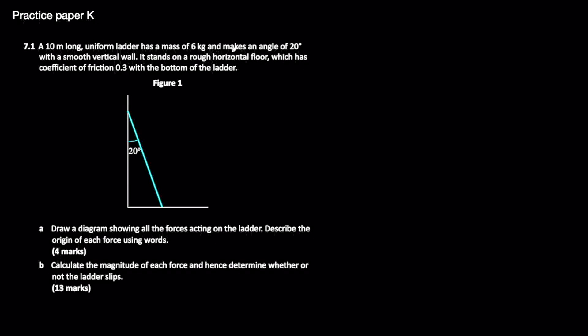The question says a 10 meter long uniform ladder has a mass of 6 kilograms and makes an angle of 20 degrees with a smooth vertical wall. It stands on a rough horizontal ground floor which has a coefficient of friction of 0.3 with the bottom of the ladder. Part A says draw a diagram showing all the forces acting on the ladder and describe the origin of each force using words.